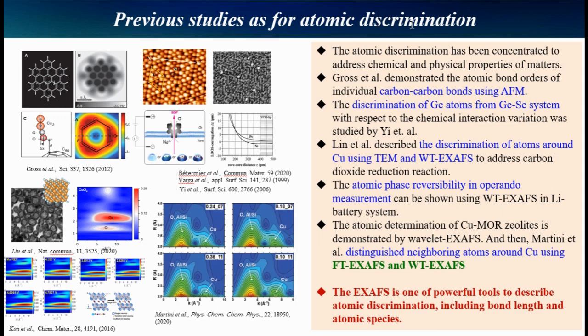The atomic discrimination in materials is very important because it addresses chemical and physical properties. To understand the atomic discrimination, researchers are using AFM, STM, TEM, and Wavelet Transform, as you see in these figures.